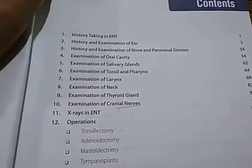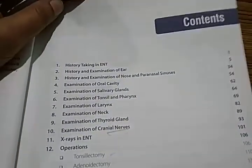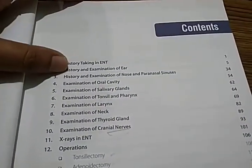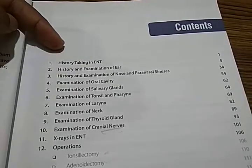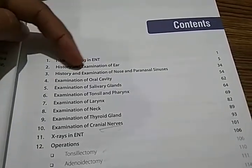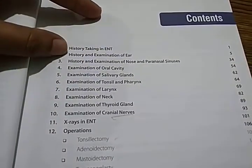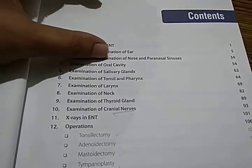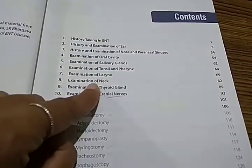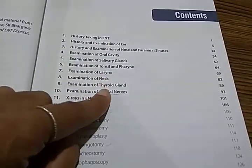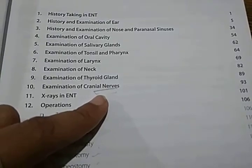In this book you can see history taking in ENT, history and examination of ear, history and examination of nose and paranasal sinuses, examination of oral cavity, salivary glands, tonsils, pharynx, larynx, neck, thyroid gland, and cranial nerves.